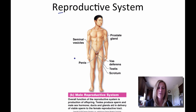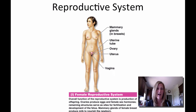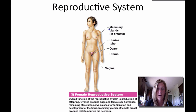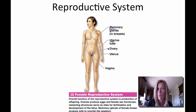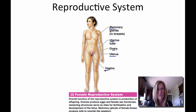The last system is the reproductive system. In the male, it includes the prostate gland, seminal vesicles, penis, vas deferens, testes, and scrotum. In the female, the major organs are the mammary glands and breasts, uterine tubes (also called fallopian tubes), ovaries, uterus, and vagina. The overall function of the reproductive system is to produce offspring.